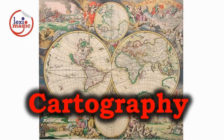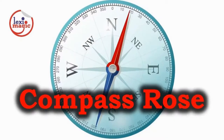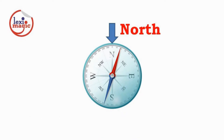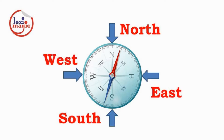Cartography is the area of study that involves the study and preparation of maps. A major element in cartography is the marking of directions. A magnetic compass is the most common device for finding directions, with the magnetic needle pointing towards north. The other principal directions on the compass are south, east, and west.